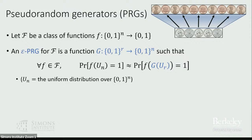Traditionally, the class script F that people have been most interested in is where you take script F to be everything that can be computed in polynomial time. Pseudorandom generators that fool all polynomial time computations and that can themselves be computed in polynomial time are important and useful for cryptography, derandomization, and all sorts of other things. But the only trouble is that we don't know whether they exist. It seems to be extremely difficult to design such pseudorandom generators, so for the time being we should probably consider them to be out of reach.